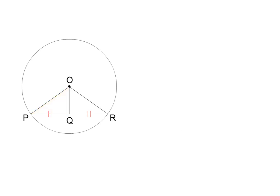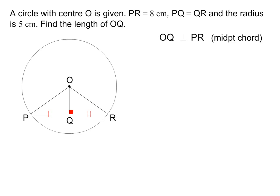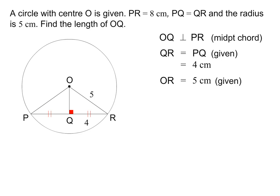Let's do another typical question. A circle with center O is again given. PR is equal to 8 cm, PQ is equal to QR, and the radius is 5 cm. Find the length of OQ. Using the converse of Theorem 1, we can conclude that OQ is perpendicular to PR. We are given that PR is equal to 8 cm, so QR is equal to 4 cm. We are given that the radius is 5 cm. To find the length of OQ, we need to use Pythagoras in triangle OQR.